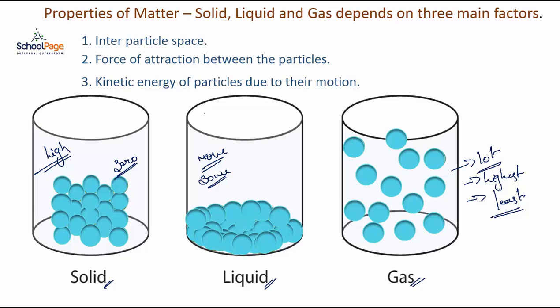The three factors that is interparticle space, force of attraction and kinetic energy of the particles are the three main factors which govern the properties of three different states of matter.